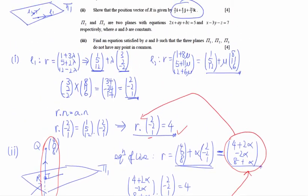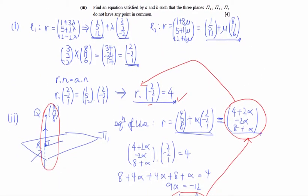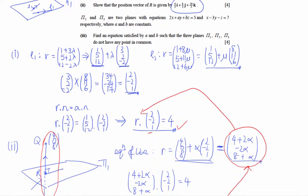Let's move on to the last part, which involves one more plane. There are planes π2 and π3 with given equations where a and b are constants. We need to find an equation satisfied by a and b such that the three planes do not have a common point.